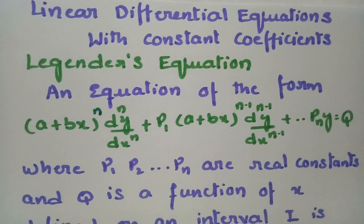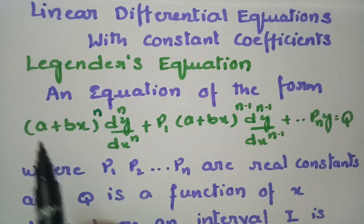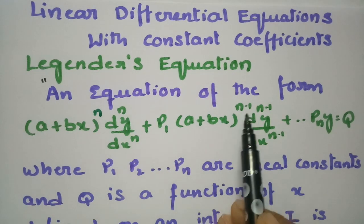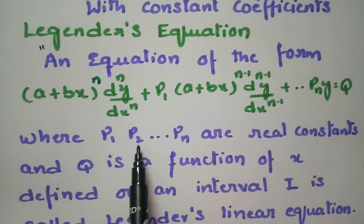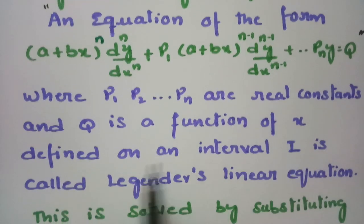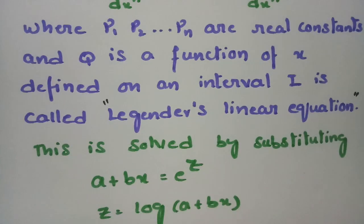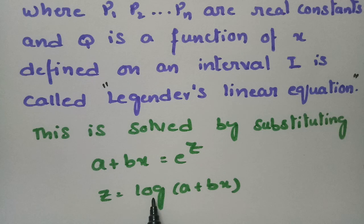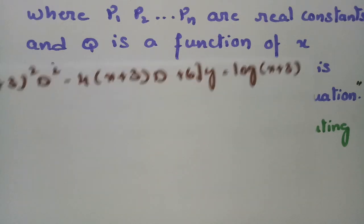In today's video I am going to explain Legendre's equation, from linear differential equations with constant coefficients. An equation of the form (a + bx)^n · d^n/dx^n + p1·(a + bx)^(n-1)·d^(n-1)/dx^(n-1) + ... + pn of y = q, where p1, p2, ..., pn are real constants and q is a function of x defined on an interval, is called Legendre's linear differential equation. This is solved by substituting a + bx = e^z, so that log(a + bx) = z.